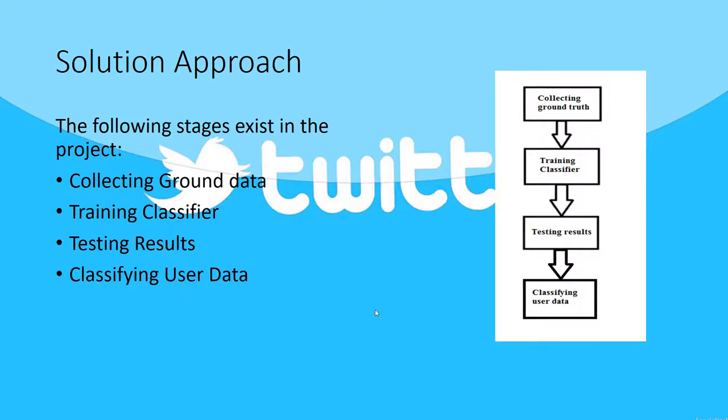The solution approach I am suggesting has four stages. The first is collecting ground data, which includes collecting the ground truth. Second is training the classifier. In the third stage we test if the classifier is good enough to use in the system. If so, then we go on to the fourth stage, which is classifying live unlabeled data that we get from Twitter.